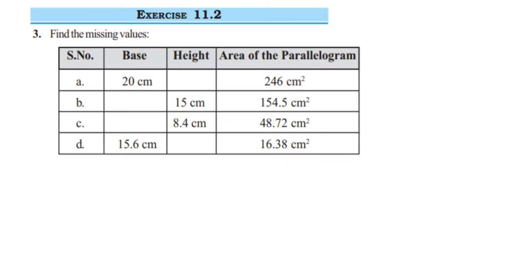Here is a question on Exercise 11.2, third one — this is from the Area and Perimeter chapter of Class 7. We have to find the missing value. We are given three columns: base, height, and area of parallelogram. We have to find either the base or the height. Since the area of parallelogram is given, we are going to use the formula: Area of parallelogram = base × height.